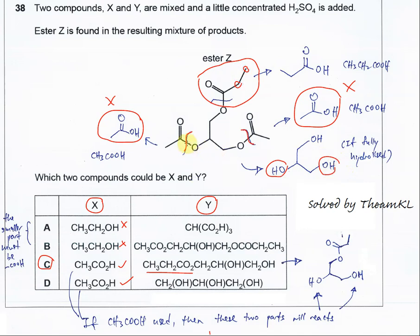This alcohol is going to react, and this part remains as ester. So we're quite sure the structure looks like something like this. This ester no change. The two alcohols here will react with the ethanoic acid to form the ester Z.